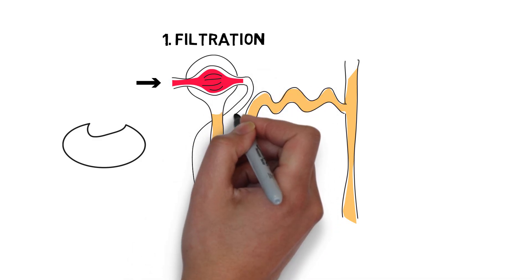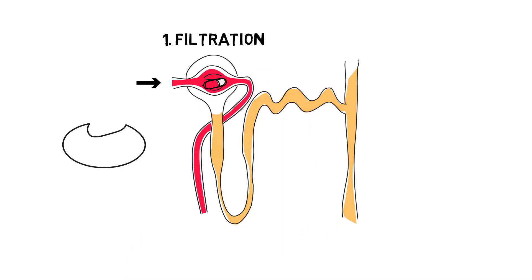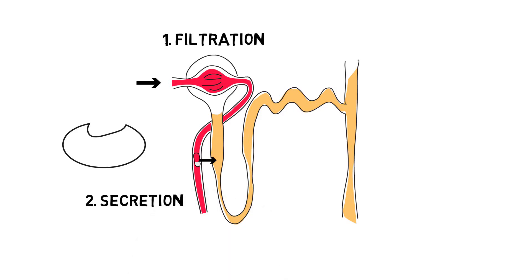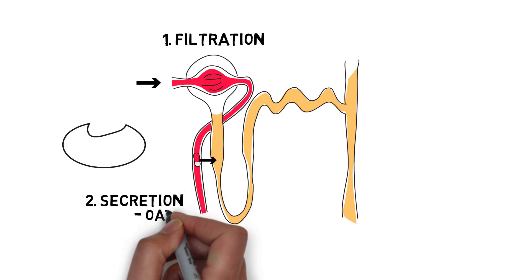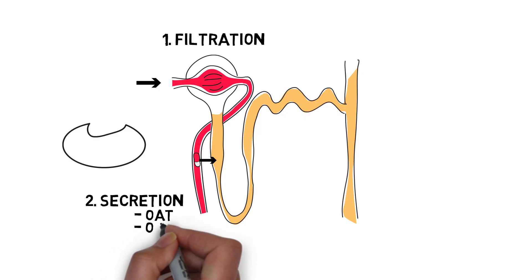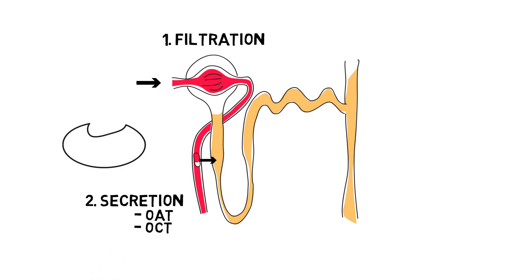Drugs that were not filtered will leave the glomerulus through the efferent arteriole and past the proximal tubule, where they may undergo active secretion. Note that this applies to a lot of renally cleared drugs. Secretion is performed by mainly two transporters: either the organic anion transporter for weak acids, or the organic cation transporter for weak bases.